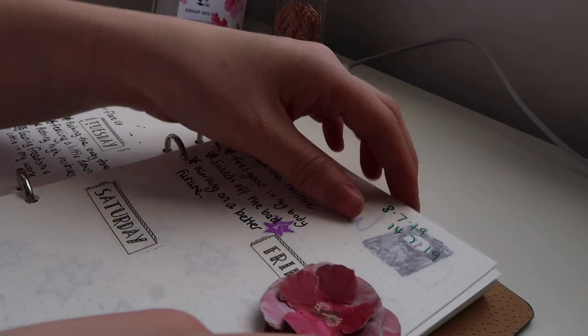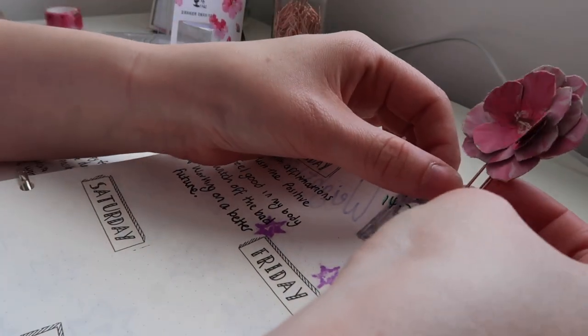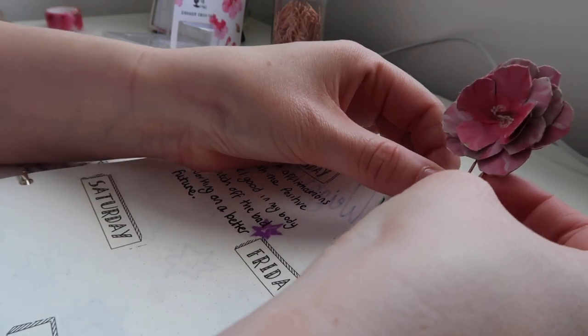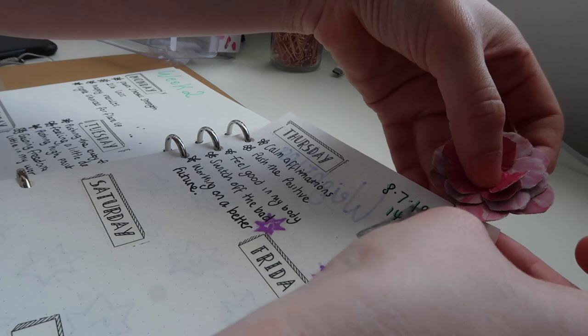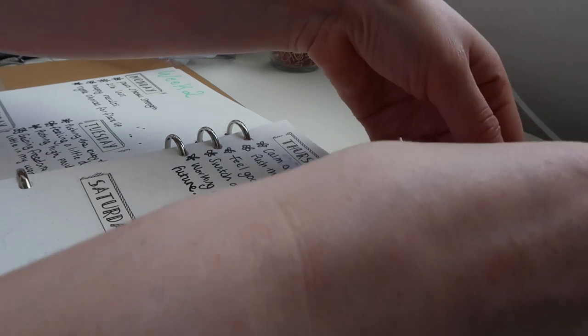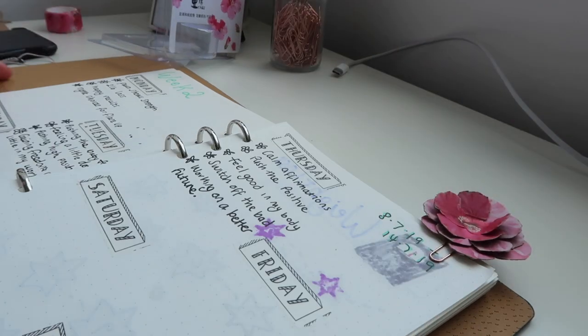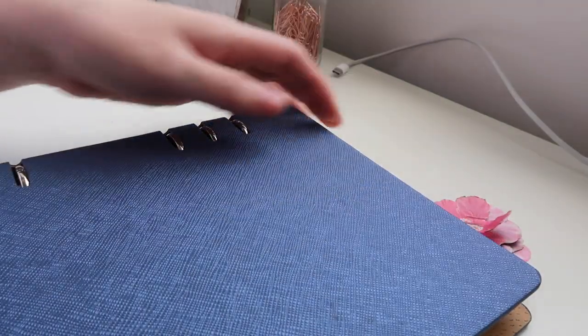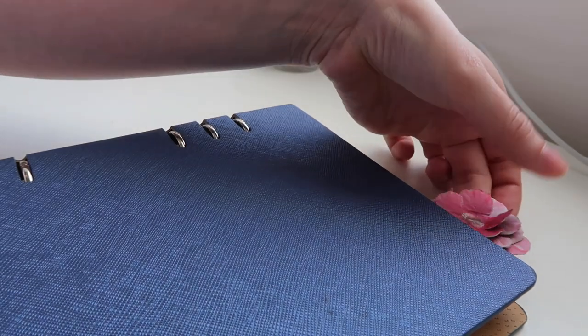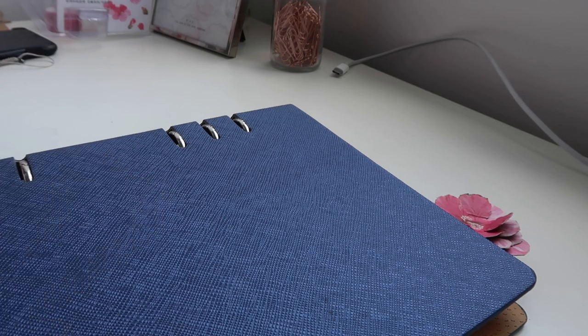Okay so all you need to do then obviously is paperclip the page you were on, which I am trying to do one-handed like so, and then fold the book up. And there you have your little flower poking out the top.